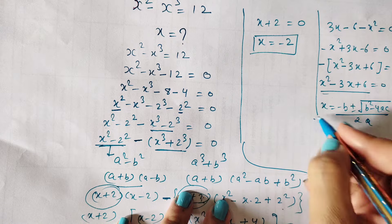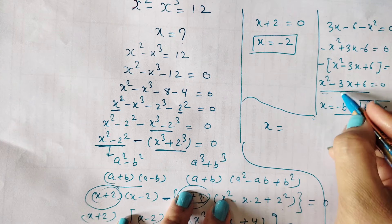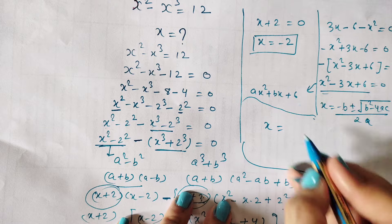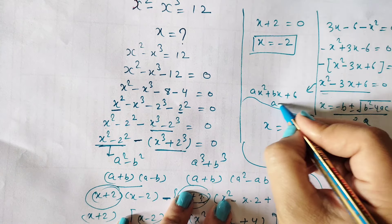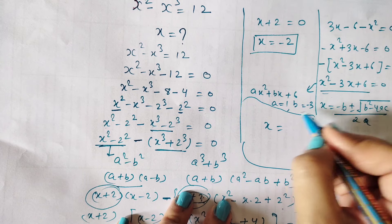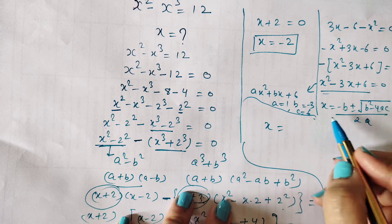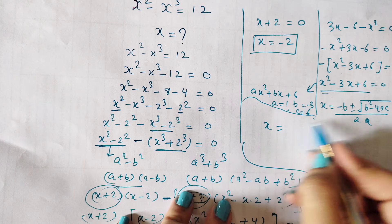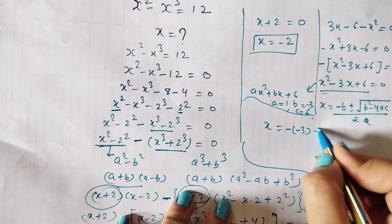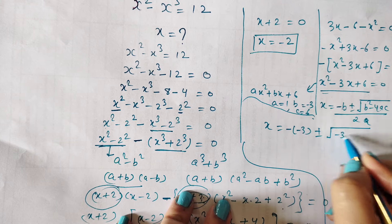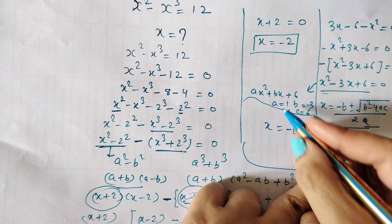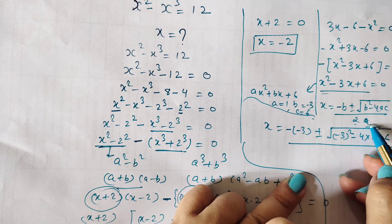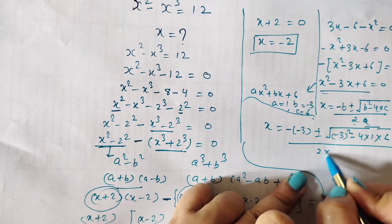Applying the quadratic formula, we compare x squared minus 3x plus 6 with the standard form to get the values of a, b, and c. The coefficient of x squared is a equals 1, b equals minus 3, and c equals 6. Substituting: minus b is minus of minus 3, plus or minus the square root of b squared — that is minus 3 squared — minus 4 times a times c, which is 4 times 1 times 6, all over 2 times a which is 2 times 1.